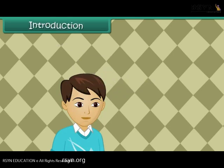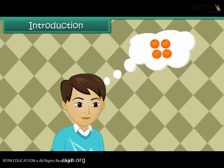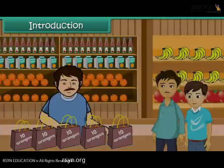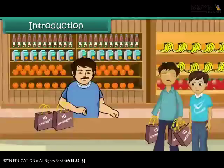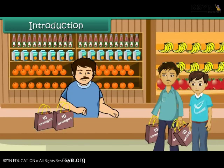Vivek loves oranges. He's come to the fruit market with his father to buy oranges. He finds one shopkeeper selling oranges in bags of ten each. His father buys three bags for Vivek. In this lesson, you will learn to group and count by tens.